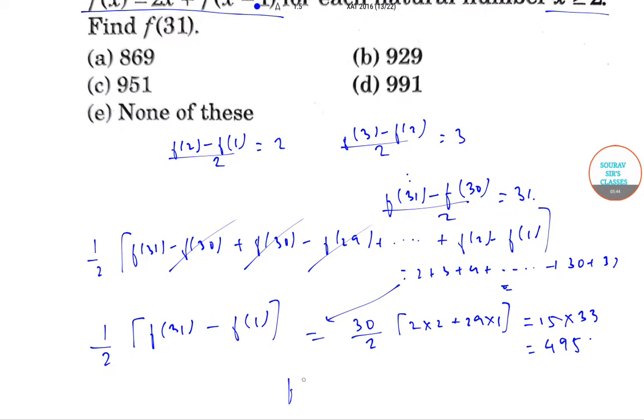So, f31 minus 1 since f1 equals 1 by 2 equals 495. So, f31 equals 2 into 495 plus 1. That is equal to 991. Correct option is option D.